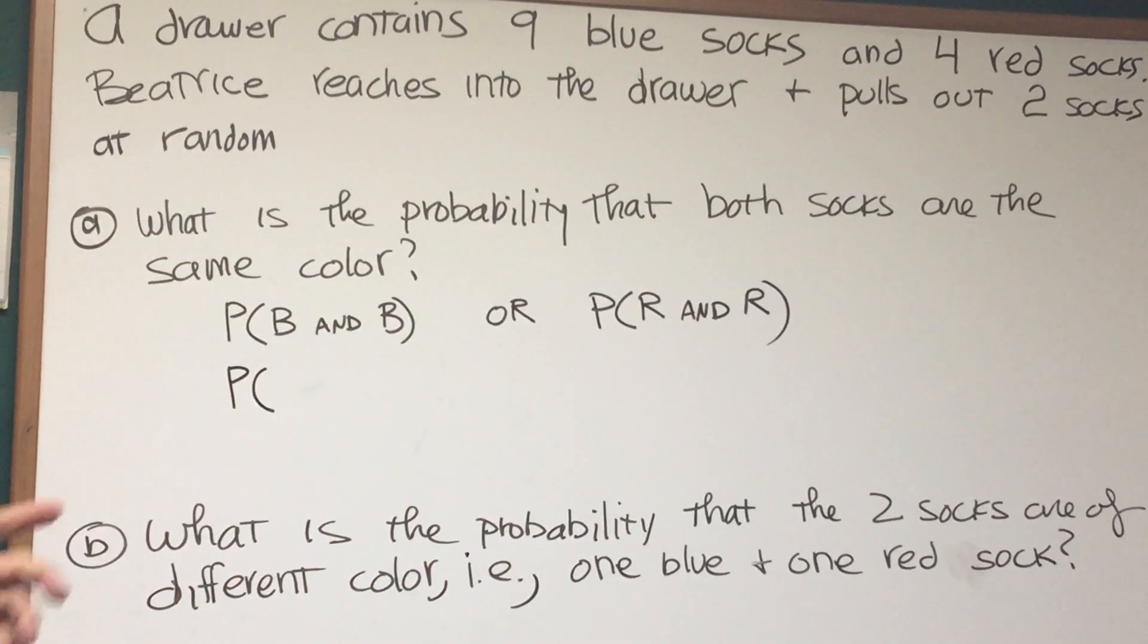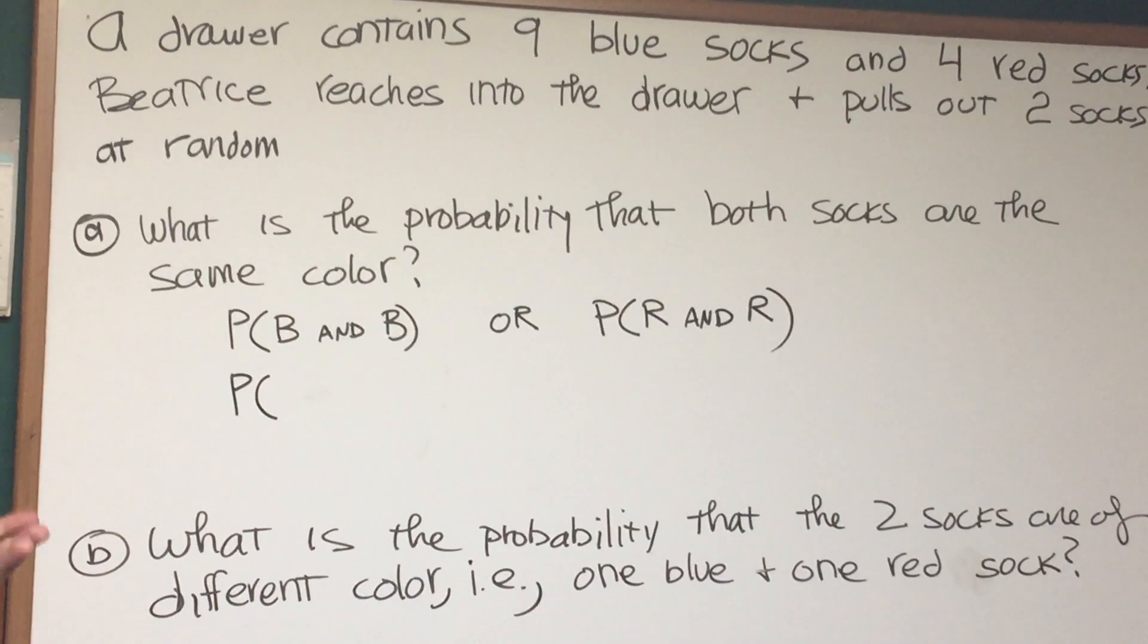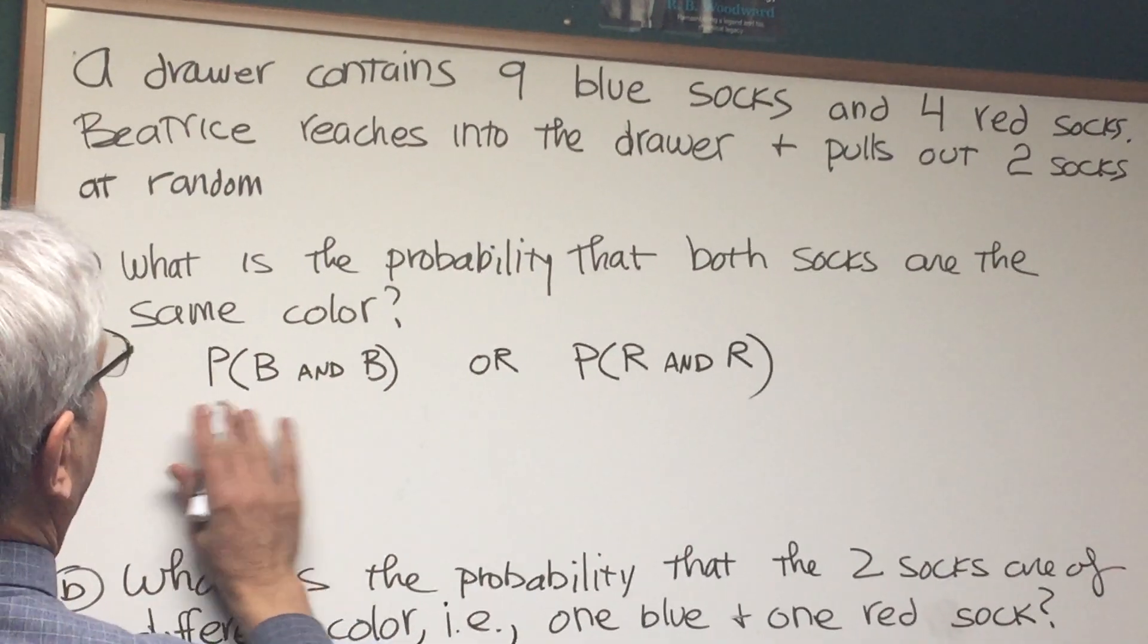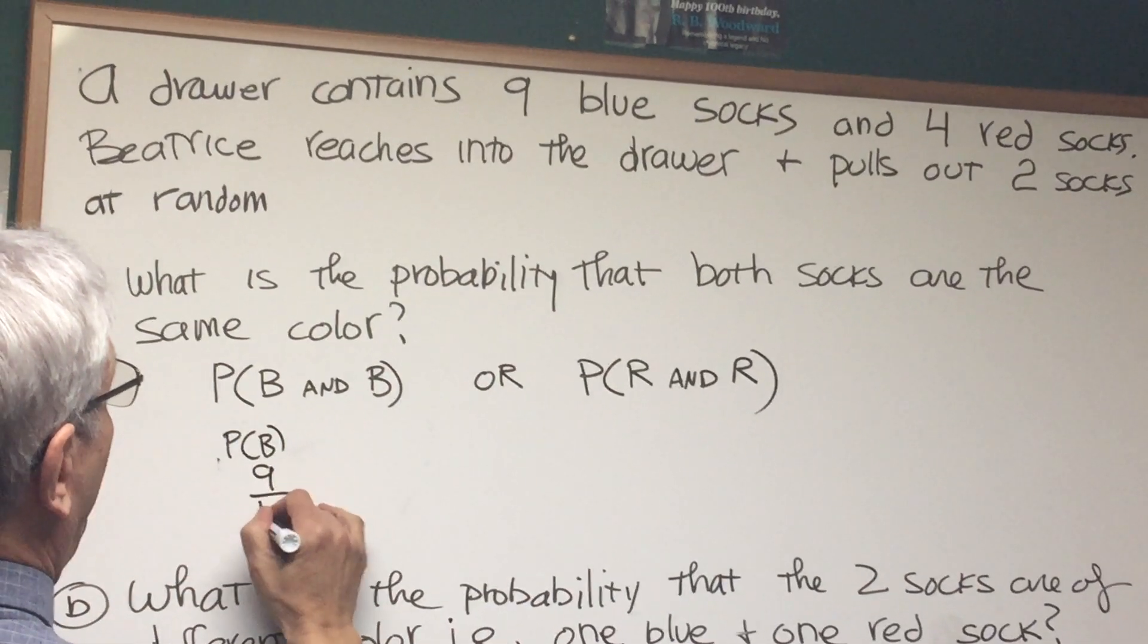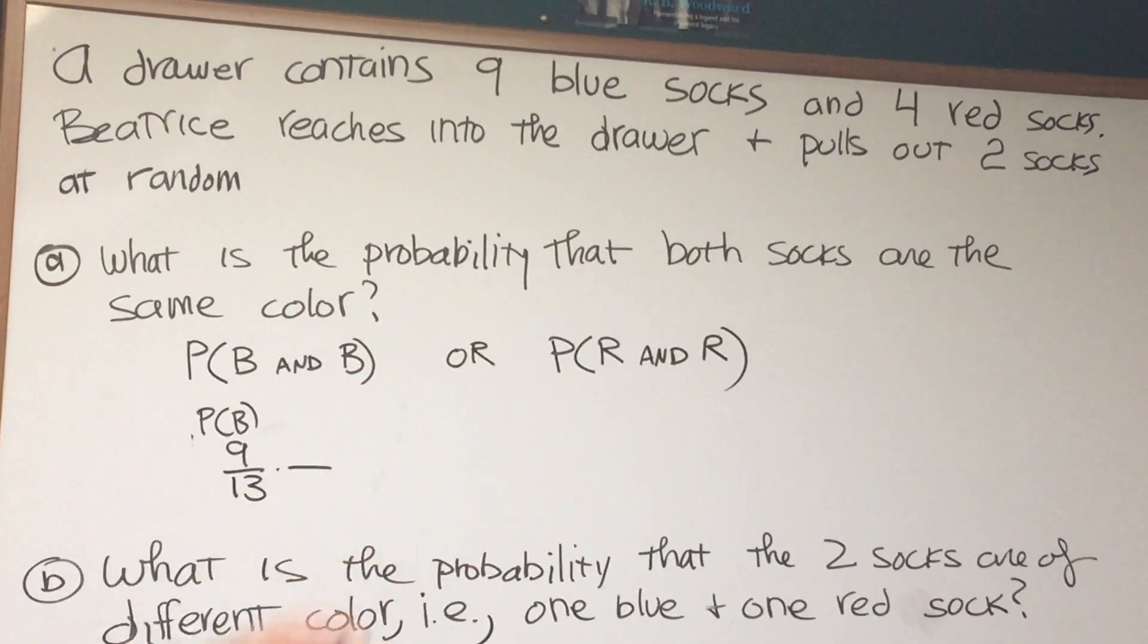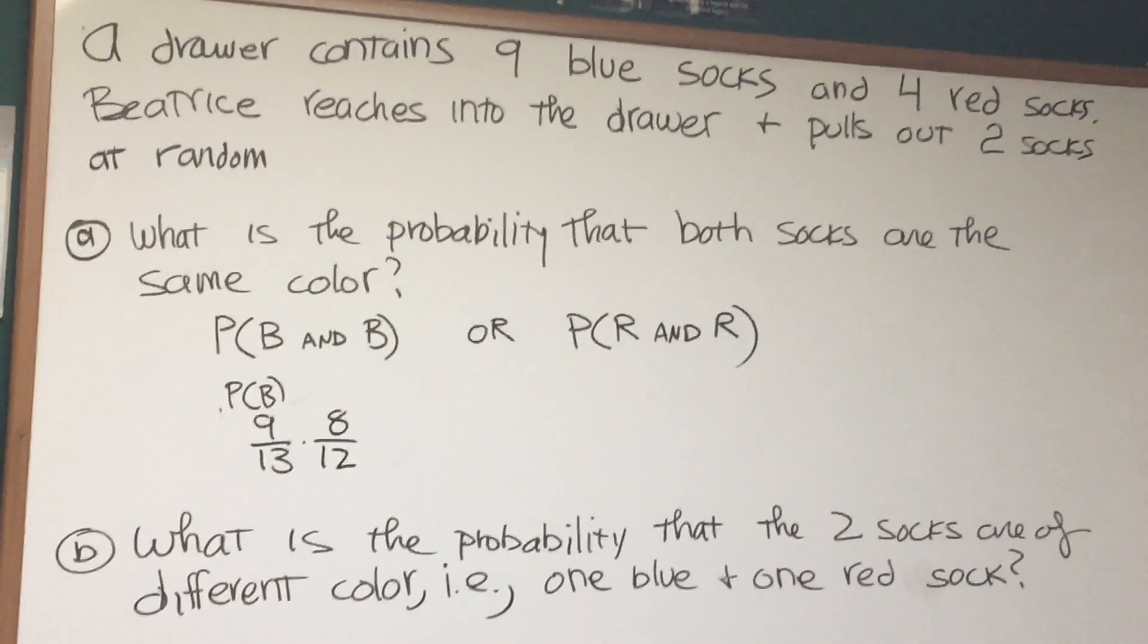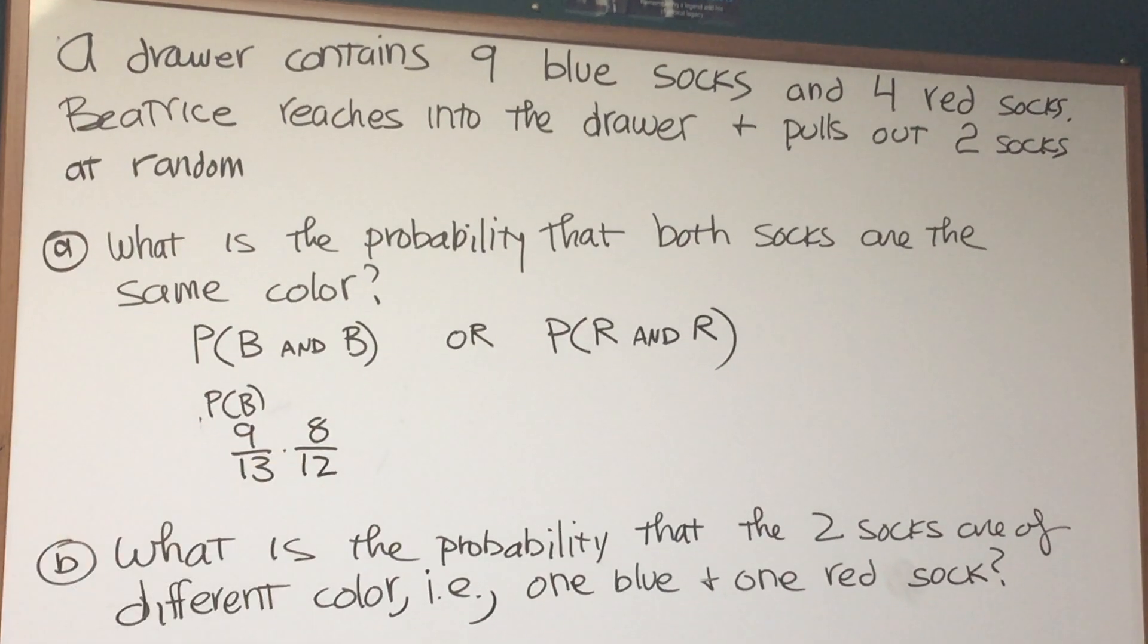What's the probability that Beatrice is going to pull a blue sock out of the drawer? Well, there's a total of 13 socks in the drawer and there are 9 blue socks. So that means the probability of picking a blue sock is going to be 9 over 13. Now, what's the probability that she's going to pick out another blue sock? Well, now there are only 12 socks in the drawer and only 8 blue socks left. So the probability of picking 2 blue socks is 9 over 13 times 8 over 12.